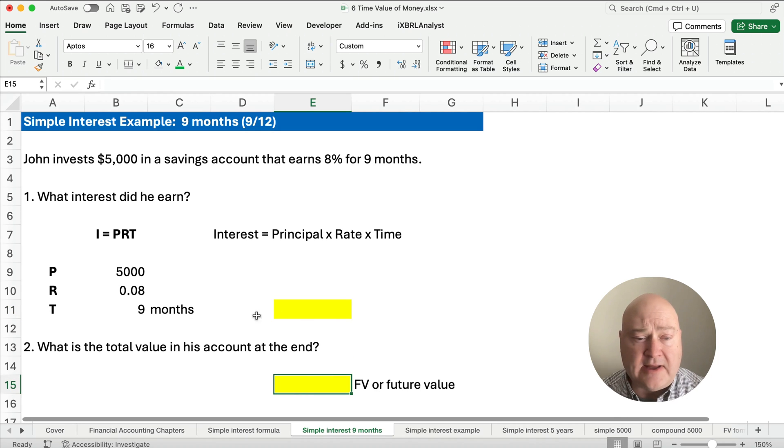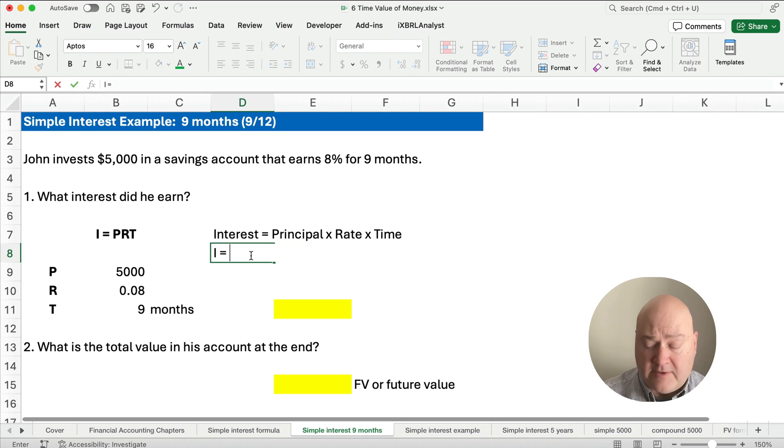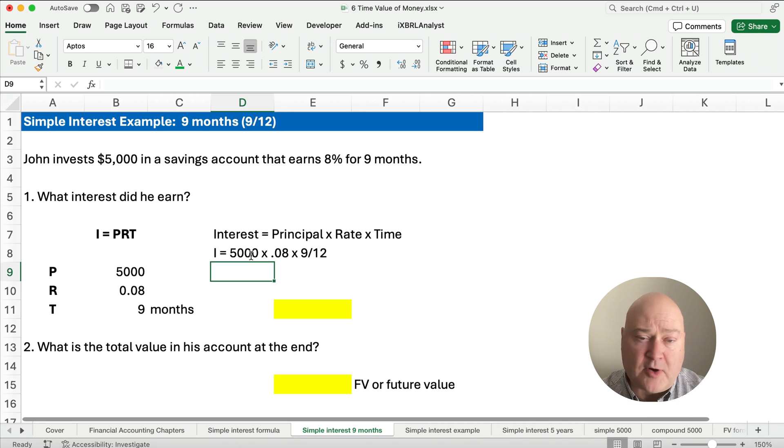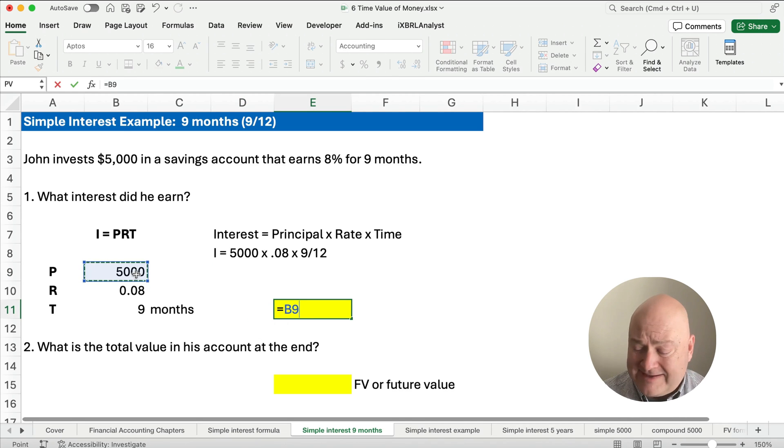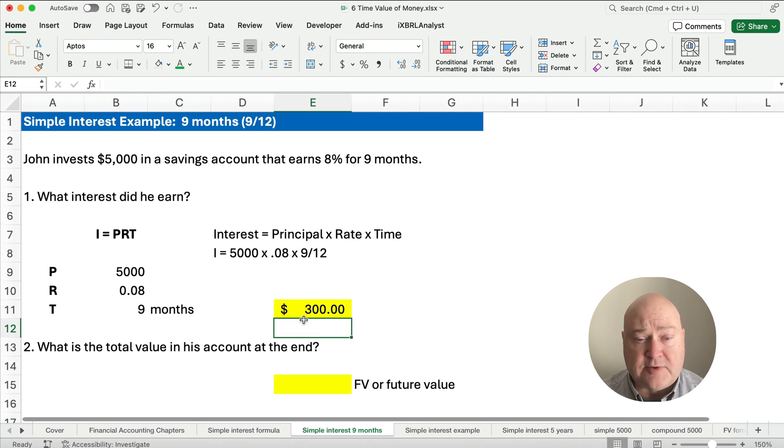I'm going to show you how to calculate the interest for John. I equals the principal 5,000 times the .08% times the time. We can't just multiply it times 9 because that would be like 9 years. We're going to do 9 divided by 12. So 9 twelfths is a partial year, 9 months out of the 12 months for the year. If we multiply that out using Excel here, 5,000 times 8%, that would be 400 for the entire year. Then we're going to multiply that times the 9 months divided by 12.